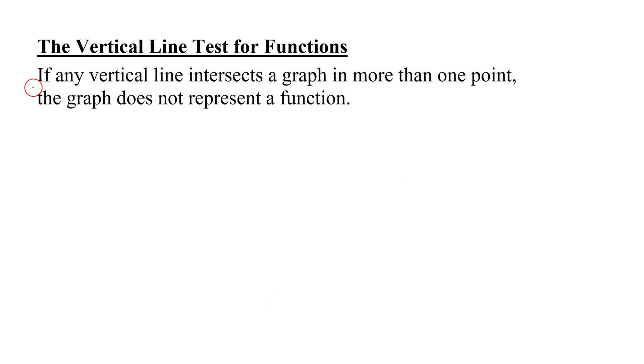This says if any vertical line intersects a graph in more than one point, the graph does not represent a function. So all it takes is one vertical line hitting the graph in more than one point, then the graph does not represent a function.